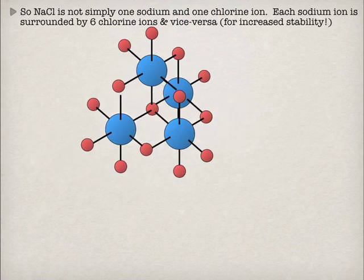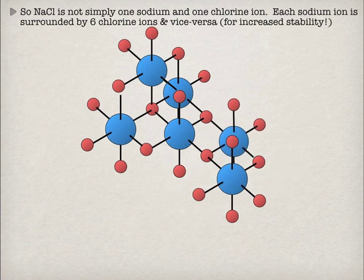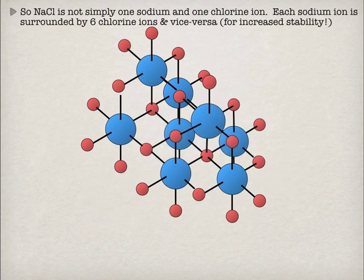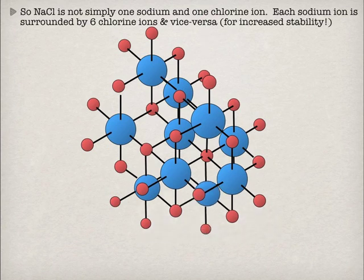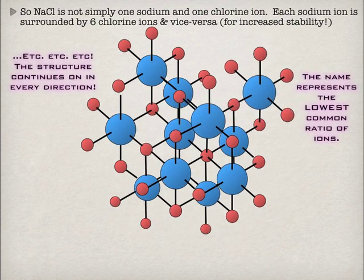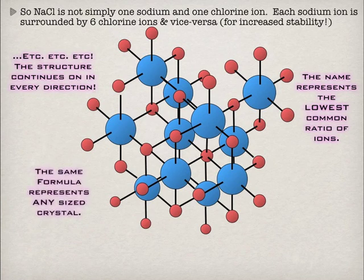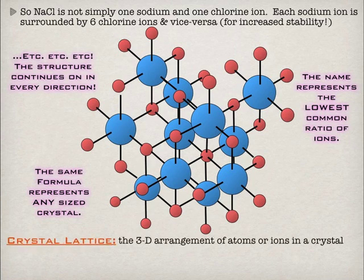This is going to continue on in all directions until you get a giant sort of jungle gym of cations and anions. We couldn't go around and name this entire thing — it would be different for every crystal. So what we do is find the ratio of the ions and write that as a formula. Even though this giant structure might be large numbers of sodium ions and a large number of chlorine atoms, we reduce it to the simplest whole number ratio. That formula can represent any sized crystal — a big piece of table salt or a tiny piece can all be represented by the ratio NaCl.